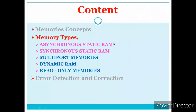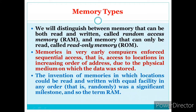First, let's understand memories. When we think of a memory as a storage device, it has two simple operations: read and write. Memories that perform both read and write are called Random Access Memory, or RAM.